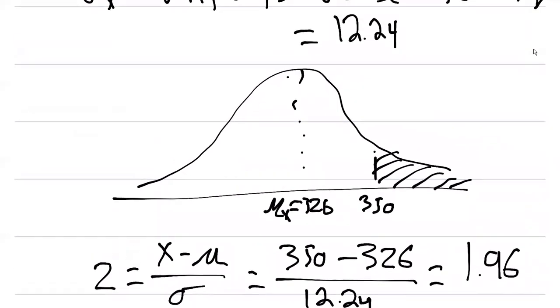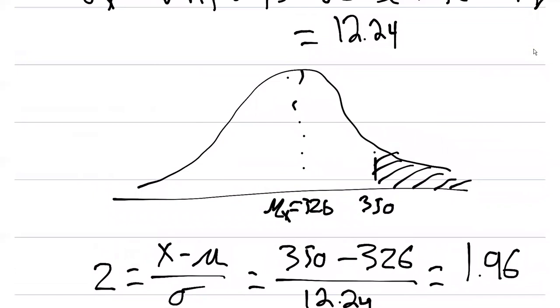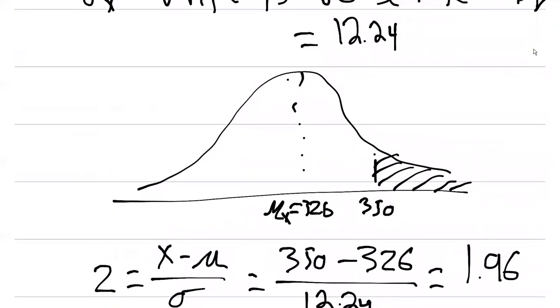If we were to put that back on the table, you can imagine this would be a value where z equals zero right at the mean. Our value when x is 350, right here on the z distribution, would be 1.96.